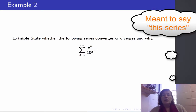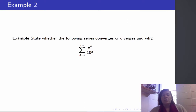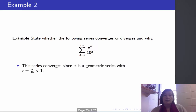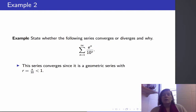This next series is e^n over 10^n, and that e shouldn't throw you off — it's a constant, so the terms of this series are some constant to the power of n. This is a geometric series: the sum of r^n where r = e/10, and since |r| < 1, we can conclude that this series converges.